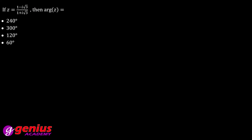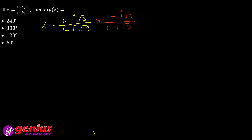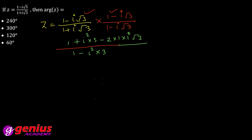Next question: if Z is given, find the argument of Z. For argument of Z, we need the real part and imaginary part, so we must first rationalize. Z = (1 − i√3) / (1 + i√3). Rationalize by multiplying numerator and denominator by (1 − i√3). The numerator becomes (1 − i√3)², which is a² + b² − 2ab = 1 + 3 − 2i√3 = 4 − 2i√3. The denominator is 1 − i²·3 = 1 + 3 = 4.